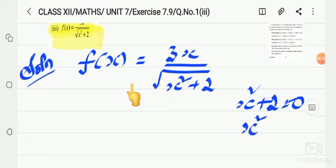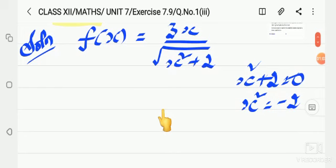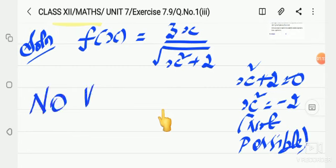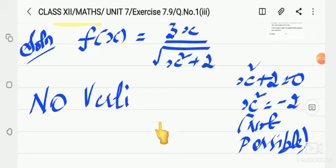Then, x square equals minus 2. Okay? x square equals minus 2. But square of a number cannot be negative. So this is not possible. Therefore, there is no vertical asymptotes. No vertical asymptotes.